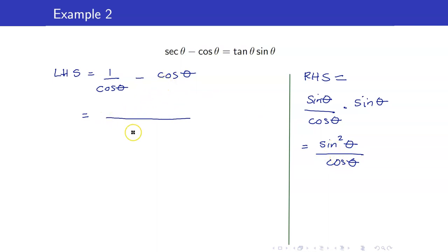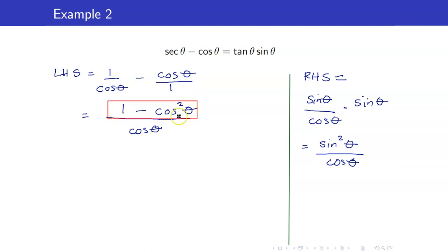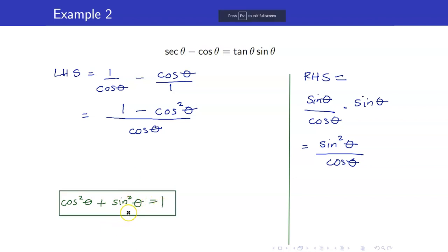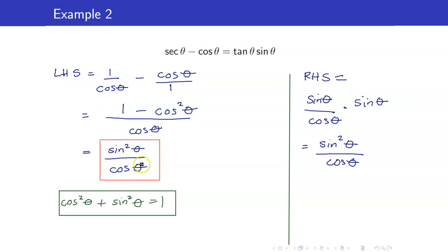For the right-hand side, just so that I know where I want to go, tangent theta is sine theta over cosine theta, times sine of theta. So that means we want to end up with sine squared theta over cosine of theta. We want to combine the left-hand side into a single expression. The LCD is already cosine theta. Cosine theta divided by cosine theta is 1, times 1 is 1, minus cosine theta times cosine theta is cosine squared theta. Using the Pythagorean identity, 1 minus cosine squared theta is equal to sine squared theta. You can stop here, as you have shown the left-hand side equals sine squared theta over cosine theta, which matches the right-hand side.